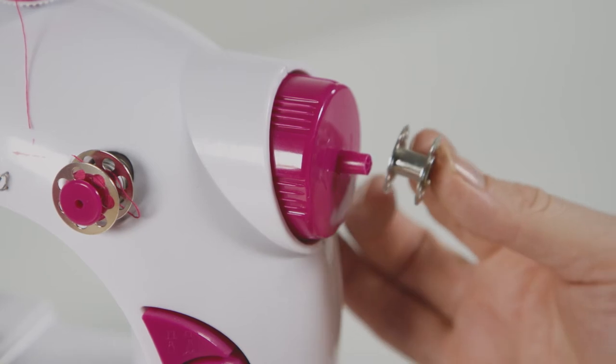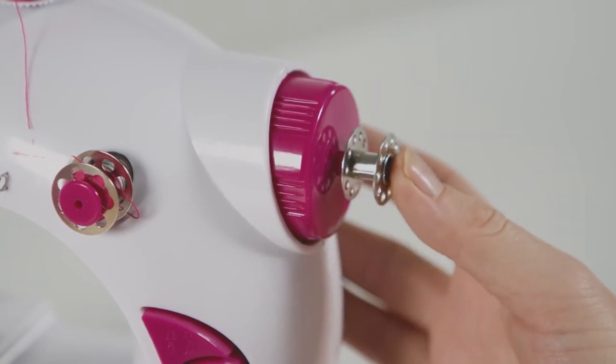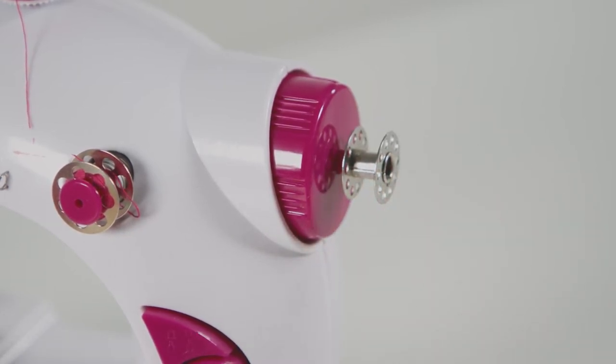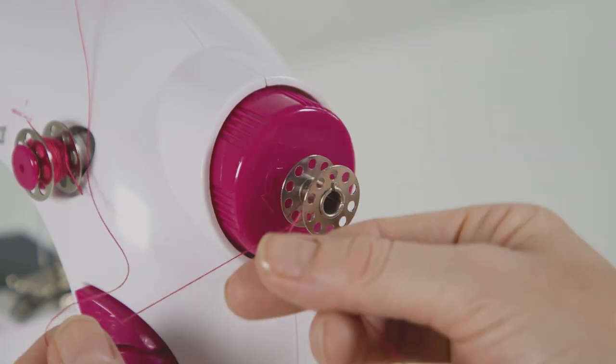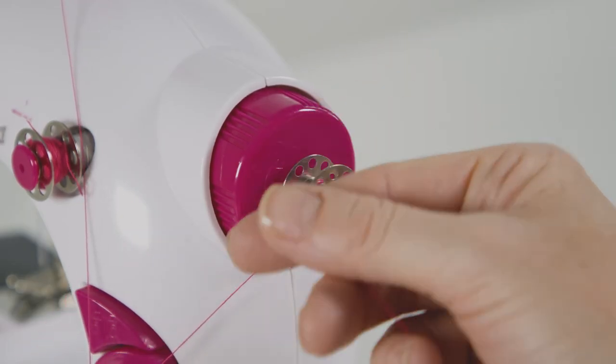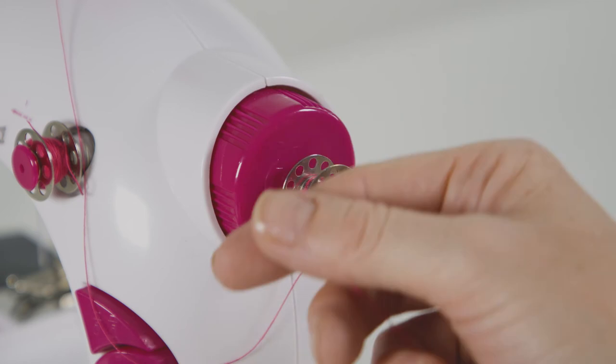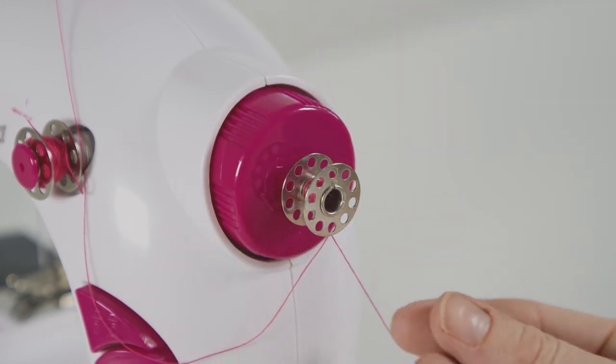Take an empty bobbin and place it on the center spindle you have just unlocked on the right-sided hand wheel. Now take your thread from the top spindle and wrap it several times around the empty bobbin, ensuring the thread is facing under and not over the bobbin.